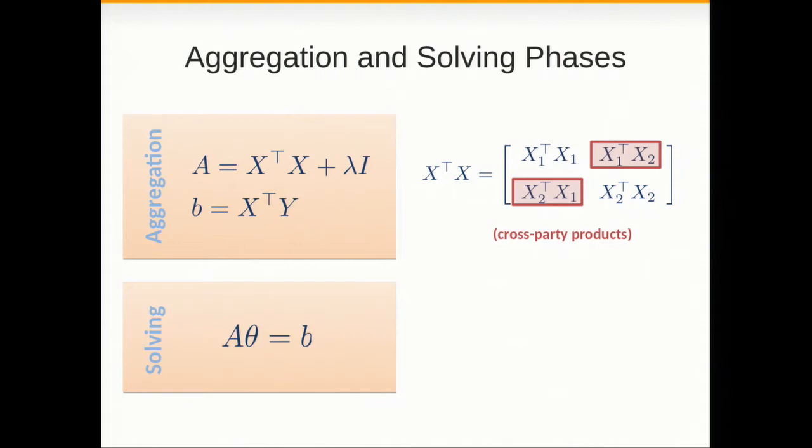The observation here is that even if you have n parties, for the aggregation phase computing this equation in a secret share form, all you need to do is a bunch of secure inner product computations. So the aggregation phase reduces to computing the value of inner products between private vectors held by different parties. We implemented two efficient protocols for inner product.